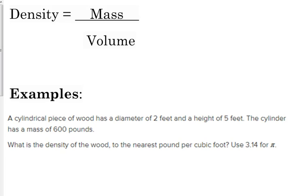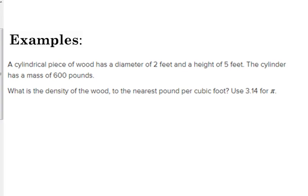So let's look at this first example. A cylindrical piece of wood has a diameter of 2 feet and a height of 5 feet. The cylinder has a mass of 600 pounds. What is the density of the wood to the nearest pound per cubic foot? So, let's start with just writing down our formula. Density equals mass divided by volume. The question is, what's the density? Okay, give us the mass of 600. We need the volume. They don't give us the volume, but they give us all the pieces we need to find the volume.